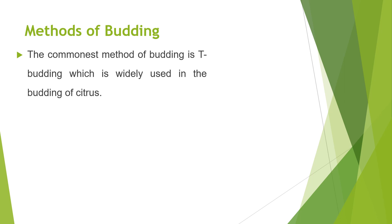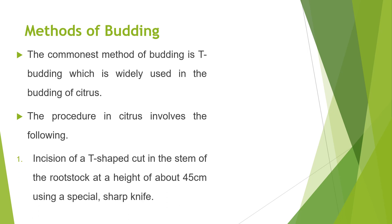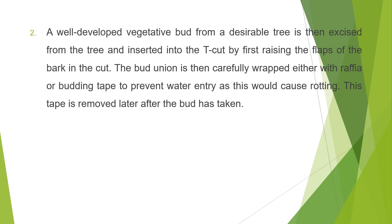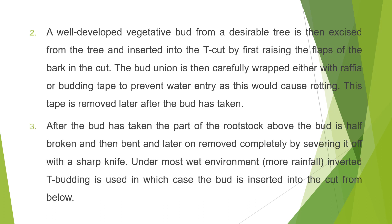The commonest method of budding is T-budding, which is widely used in the budding of citrus. The procedure involves making a T-shaped cut in the stem of the root stock at a height of about 45 cm using a special sharp knife. A well-developed vegetative bud from a desirable tree is then excised and inserted into the T-cut by first raising the flaps of the bark. The bud union is carefully wrapped with raffia or budding tape to prevent water entry, which would cause rotting; this tape is removed later after the bud has taken. After the bud has taken, the part of the root stock above the bud is half broken, bent, and later removed completely by severing it with a sharp knife. Under wet environments with more rainfall, inverted T-budding is used, in which case the bud is inserted into the cut from below.